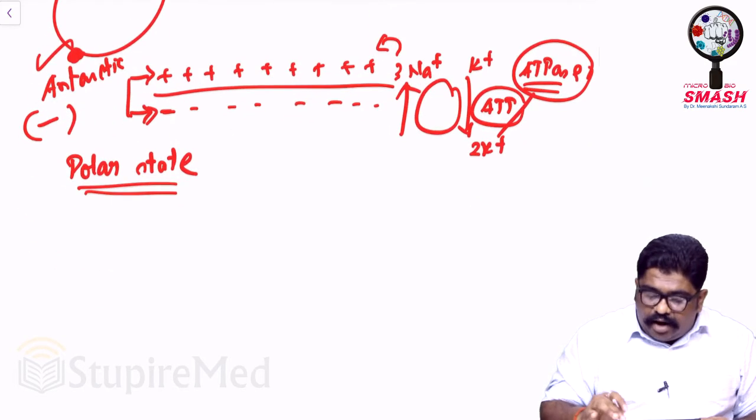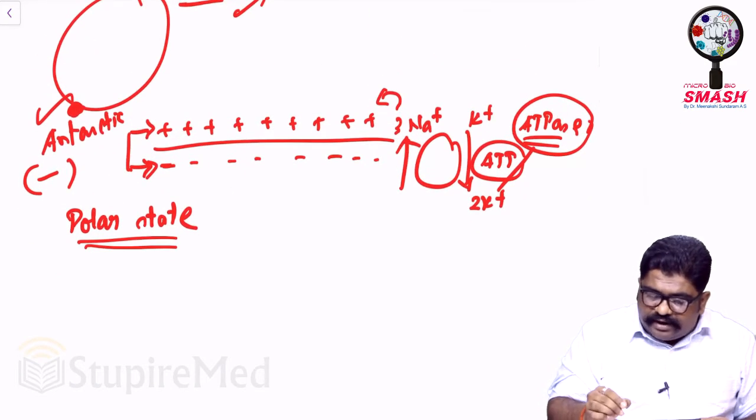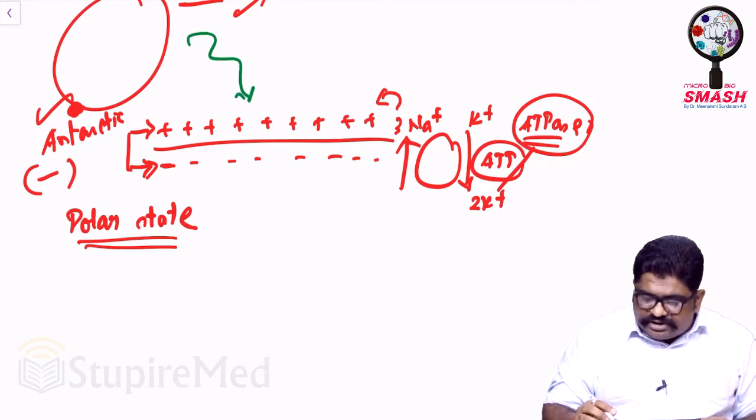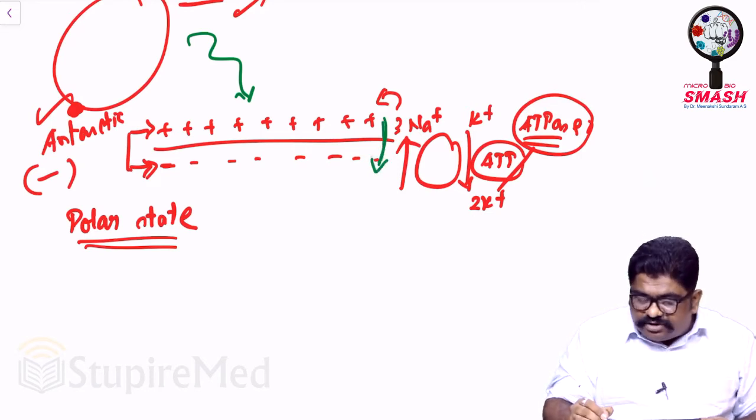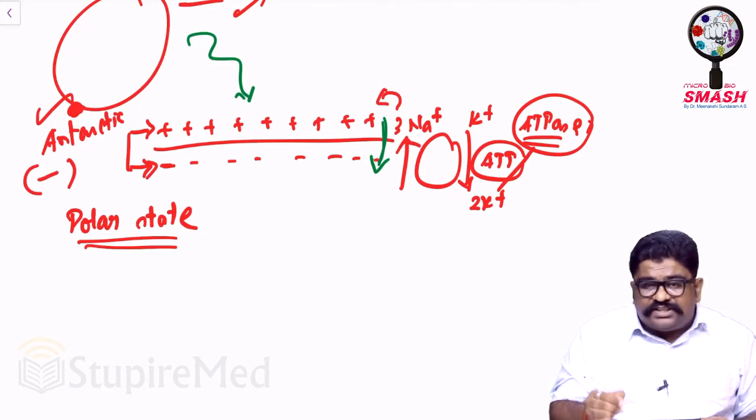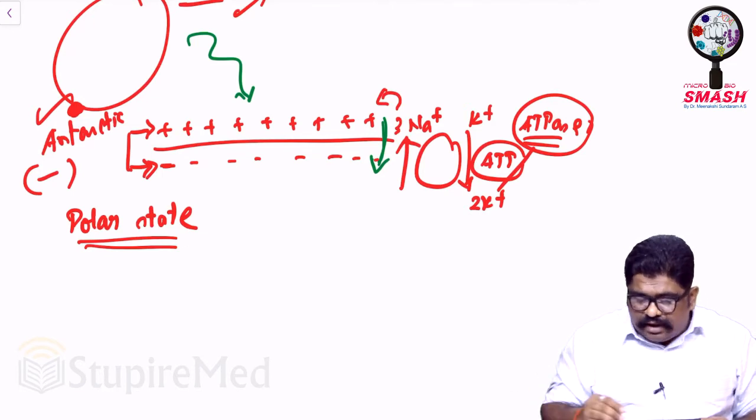Now if at all some kind of stimulus descends like lightning, that stimulus will make sure this particular sodium outflow can be blocked for a while, while potassium can actually go in. When the potassium tries to go in, you will be having the plus charges trying to slowly fill inside.